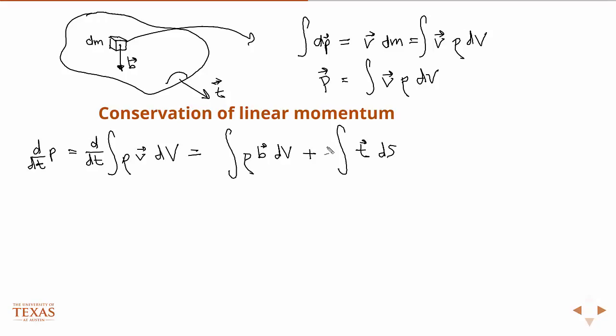Now if you remember last time, we derived an equation that said the surface traction is equal to the stress times the normal vector. That's how we derived stress, in fact, where t and n are vectors and the stress is a tensor. So we'll plug that in here.